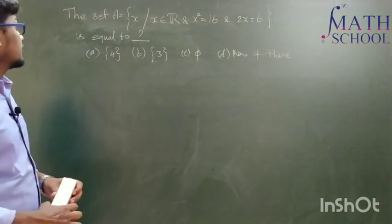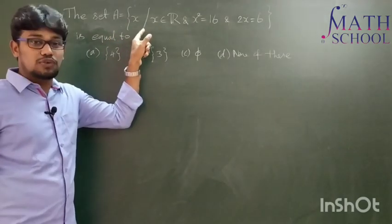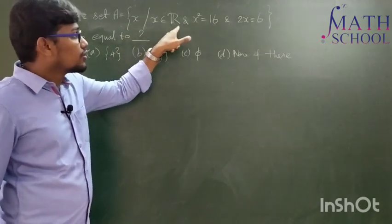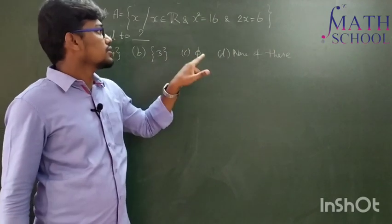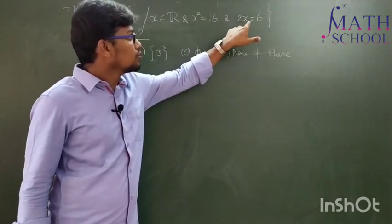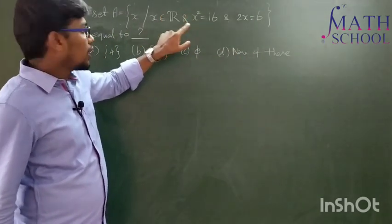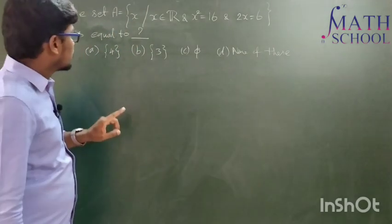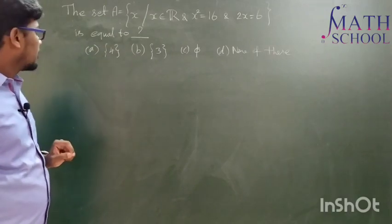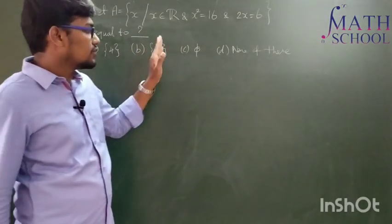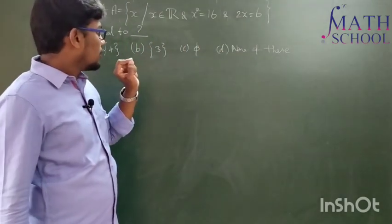Today's question is: the set A is equal to a collection of x such that x is a real number, x² = 16, and 2x = 6. So these kinds of x values are going to be in our set A. The question is, the set A is equal to what? The options are given as singleton {4}, singleton {3}, empty set, and none of these. This is a question from OJEE, the Odisha Joint Entrance Examination.